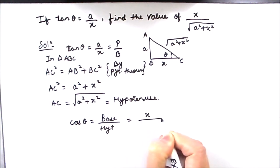Here base is x and hypotenuse is square root of a square plus x square. So the value of x divided by square root of a square plus x square is cos theta.